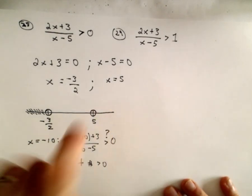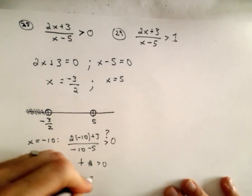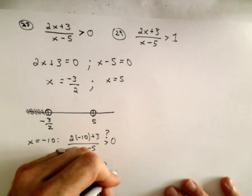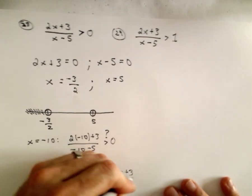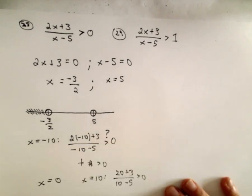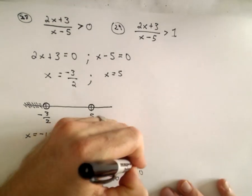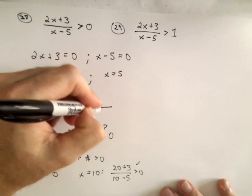And say if we use positive 10, well, I think it's easy to see. We'll get 20 plus 3 on top, 10 minus 5 on the bottom. That's going to be a positive number over a positive number, which is certainly greater than 0.